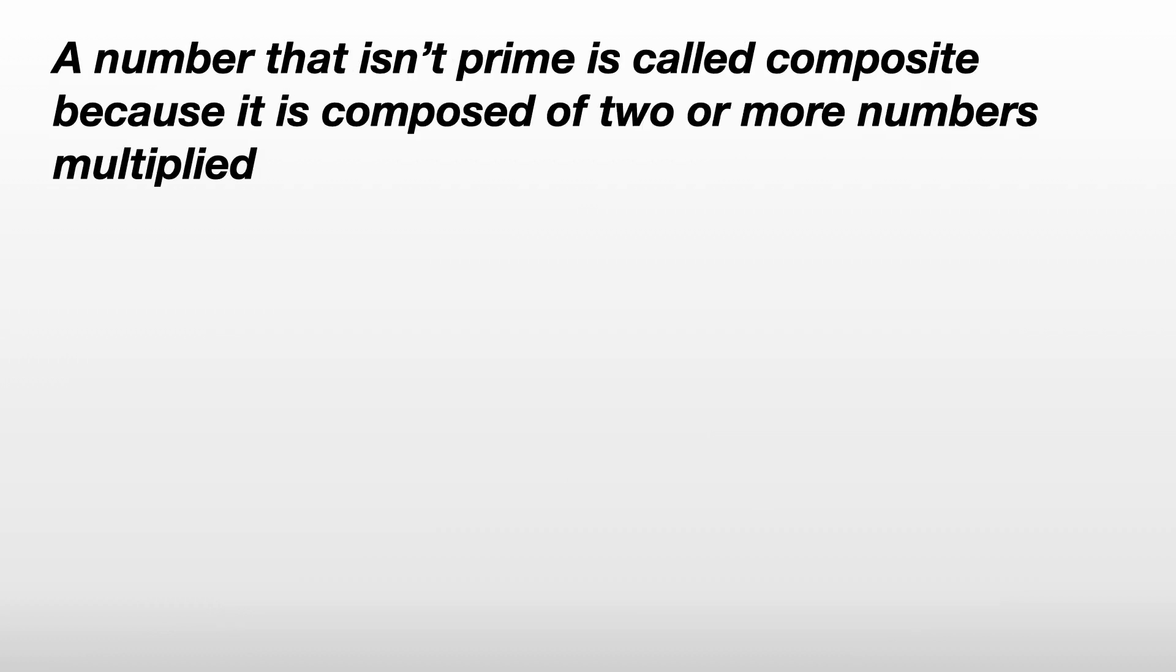A number that isn't prime is called composite because it's composed of two or more numbers multiplied together. For example, 12 equals 3 times 4, and 38 equals 2 times 19.